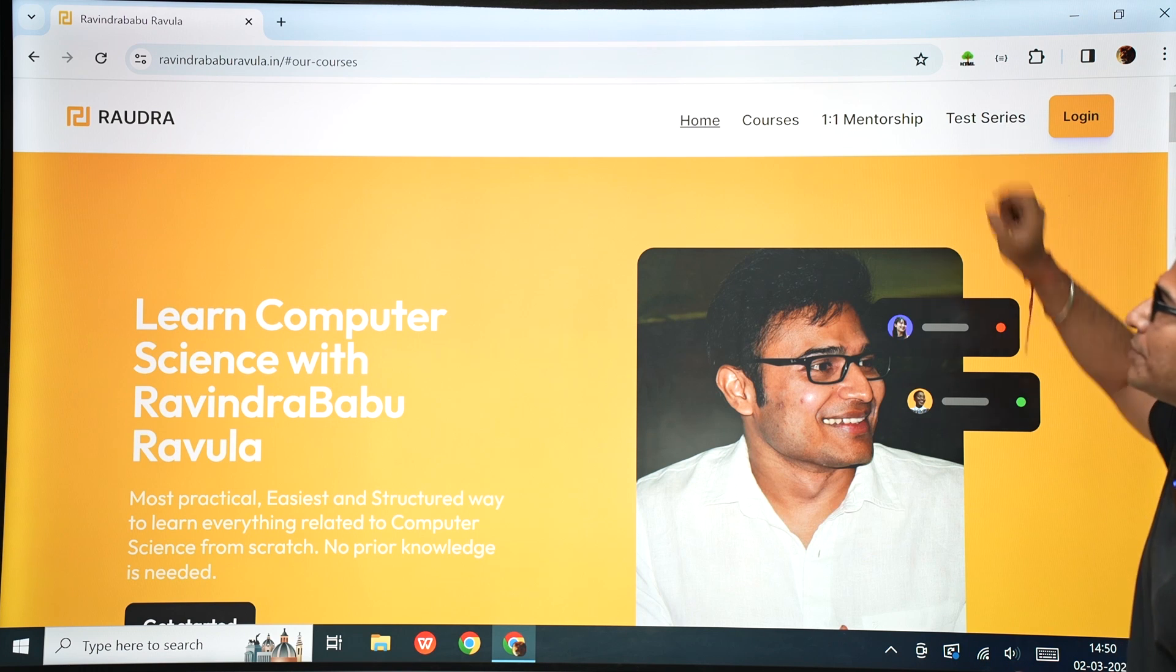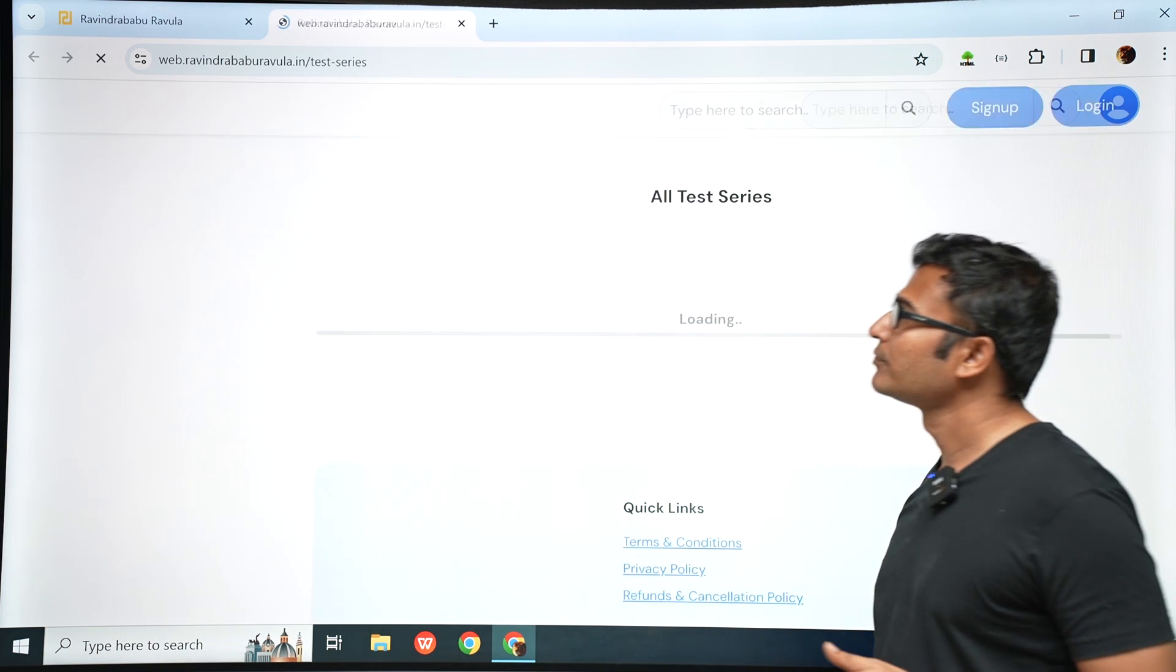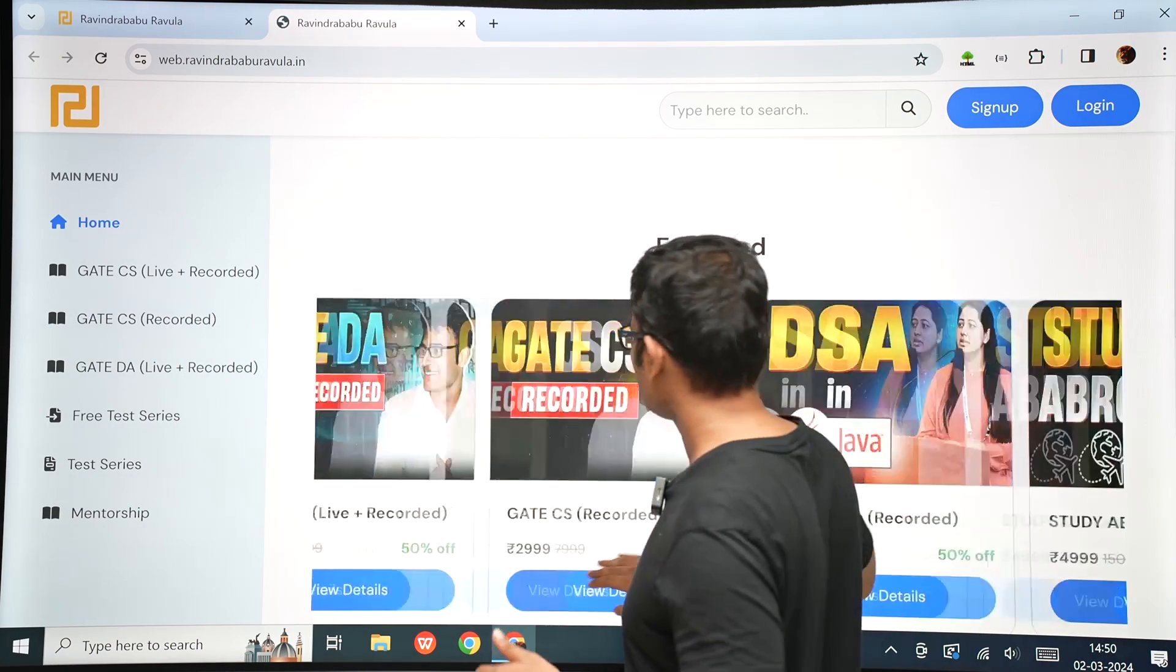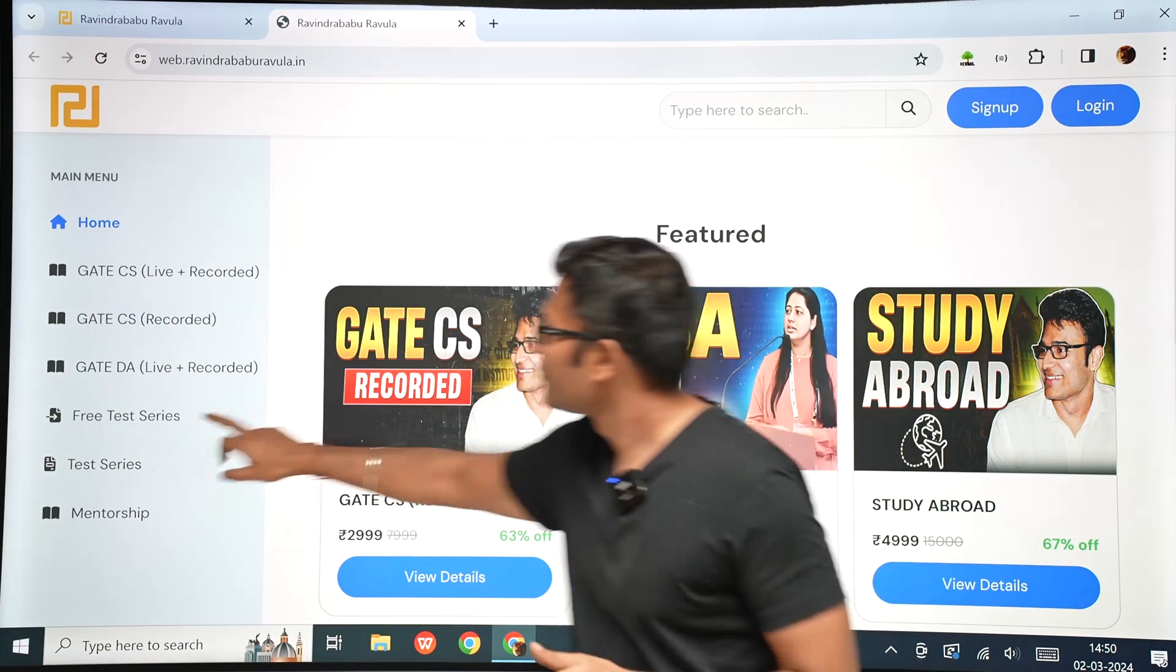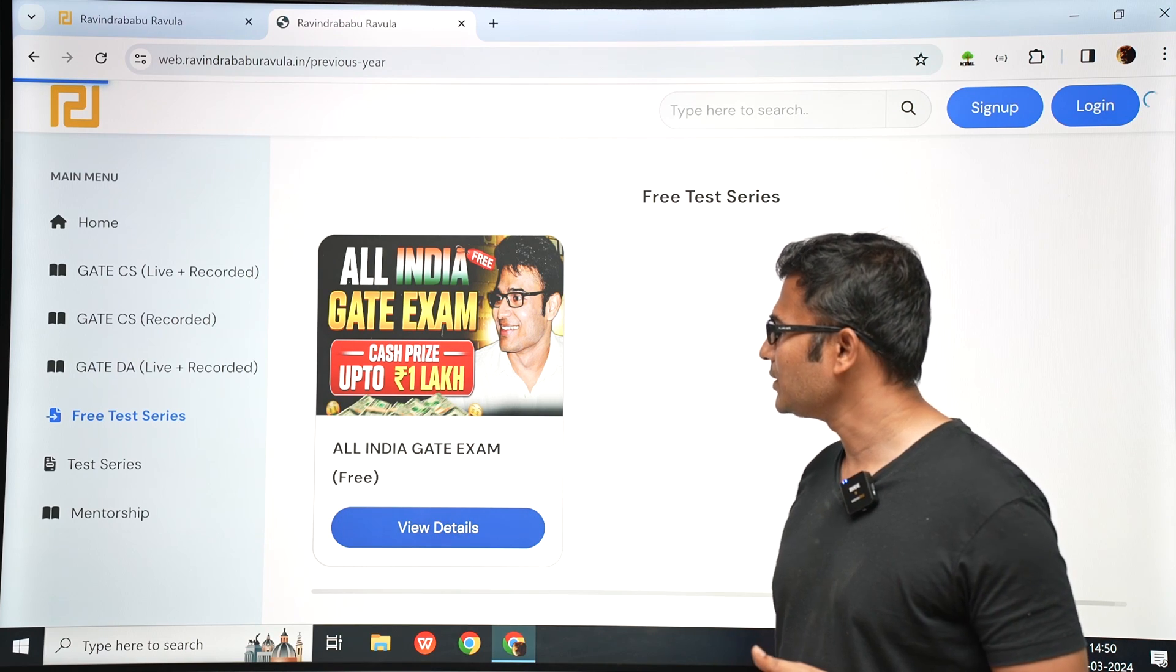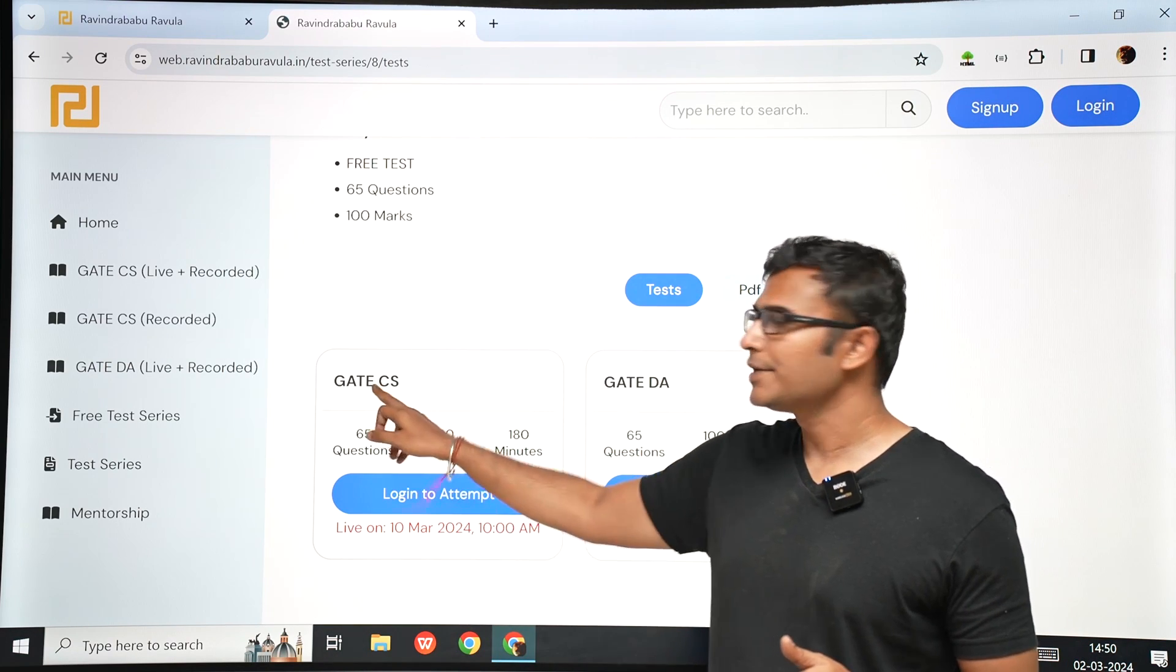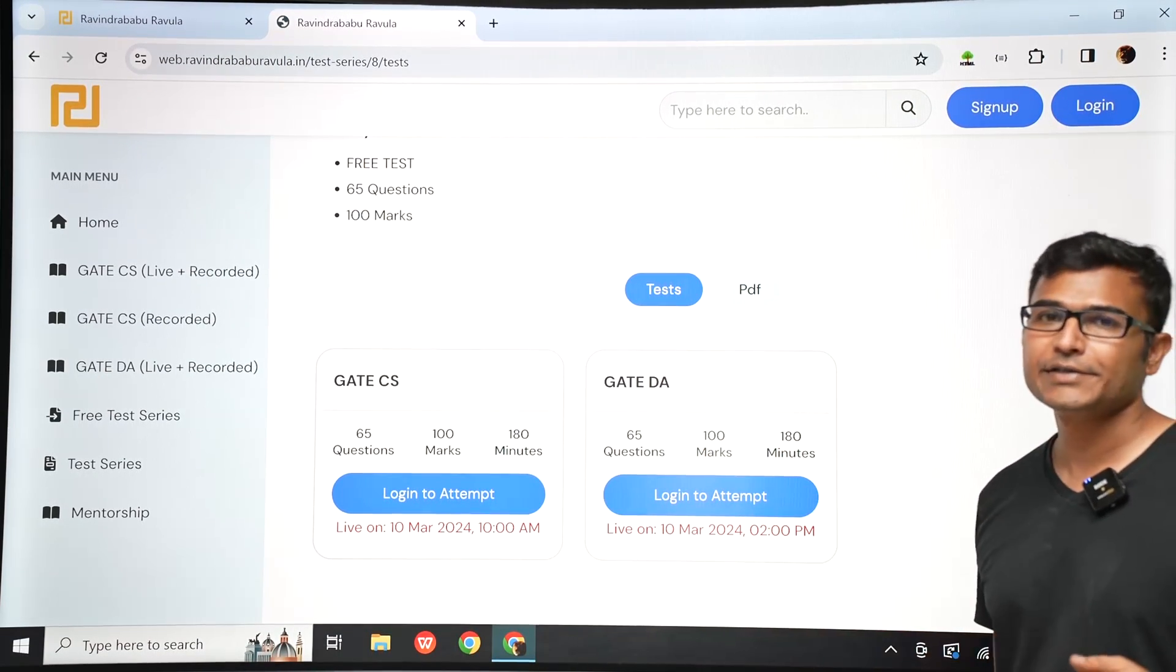And now how to write the test is, you go to test series on the website, ravindrababuravula.in. Go to ravindrababuravula.in. And you go to test series. And then you are going to get free test series. And in the free test series, you can see all India GATE exam view details. Then you are going to see two GATE tests. 10th March 10am is GATE CS test. And 10th March 2pm is GATE DA test.